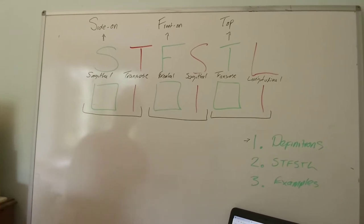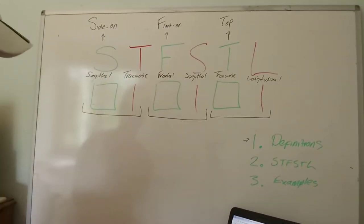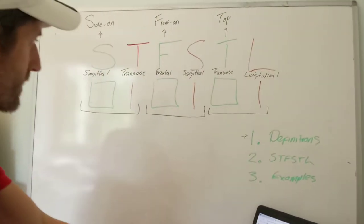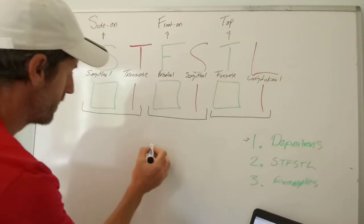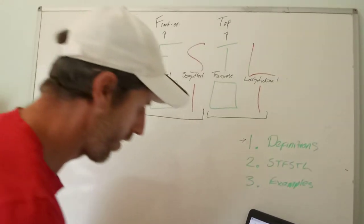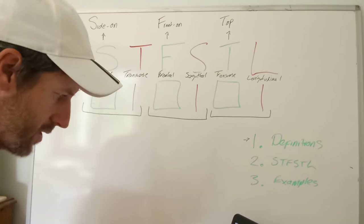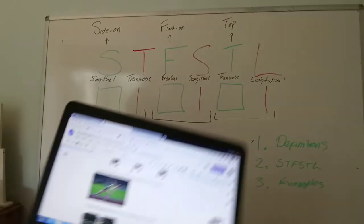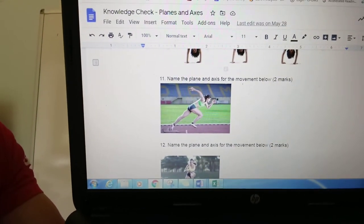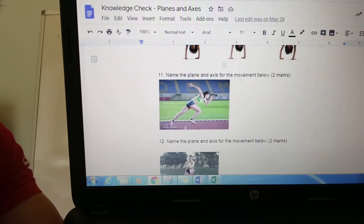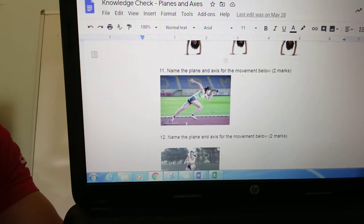I'll show you a quick example of how these can work and how this applies. The reason I say these generally go together — take the example of a sprinter in that position. You should know the plane we're looking at by now: it's from side on.